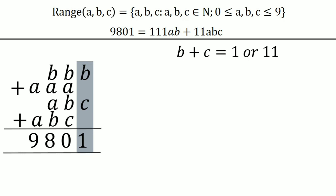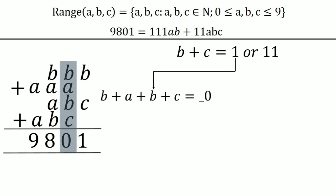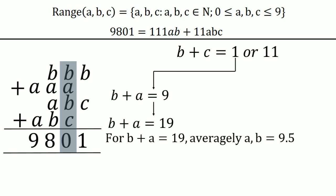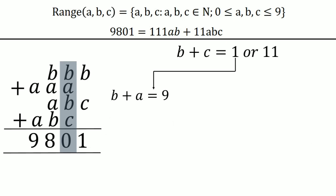If b + c = 1, there is no carry, and from the next column b + a + b + c must produce a valid digit. With b + c = 1, we need b + a = 9 for one possibility, or b + a = 19 for another — but b + a = 19 would require both to average 9.5, which exceeds 9, so only b + a = 9 is possible in this case.